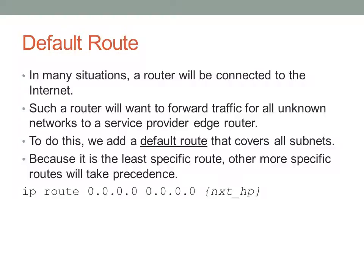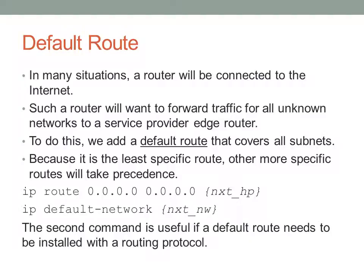The syntax for the default route is: IP route, and the address is going to be all zeros, and the subnet mask is going to be all zeros, and then you specify the next hop - typically the IP address of the service provider router connected to your router. There's also another way to specify a default route, and that is IP default-network. Default-network is more useful if you want to forward traffic out a network that's learned by a routing protocol, rather than specifying a next hop tied to a single particular host. We'll talk more about that when we get to it.